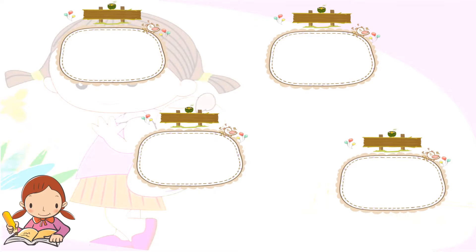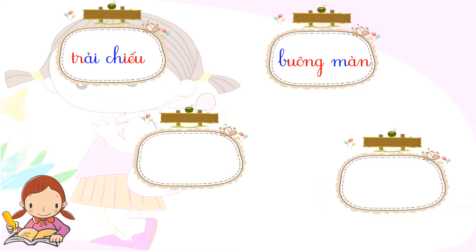Các em lấy vở nháp hoặc bảng con viết lại các từ khó này. Hãy lắng nghe cô đọc và viết lại: 'trải chiếu' — ta cùng kiểm tra. Tiếp theo: 'buông màn' — ta cùng xem lại. Tiếp theo: 'liêm diêm' — các em cùng xem lại. Từ cuối cùng: 'luống râu' — các em xem lại mình viết đúng chưa.